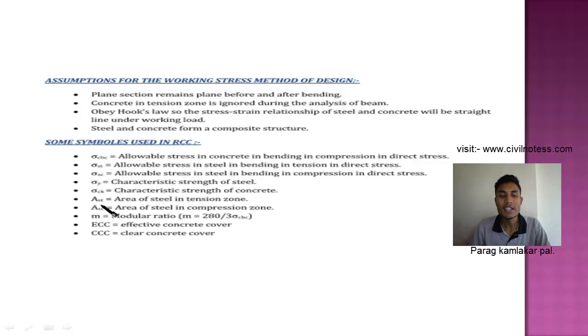Sigma Y, Sigma CK, AST, ASC, M, EC, and ECC. Sigma CBC is allowable stress in concrete. Sigma ST is allowable stress in steel in tension. Sigma SC is allowable stress in steel in compression. Sigma Y is characteristic strength of the steel. Sigma CK is characteristic strength of concrete.